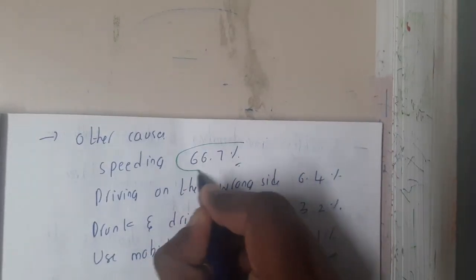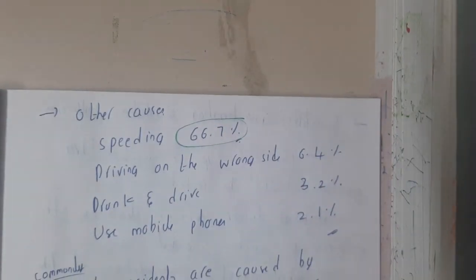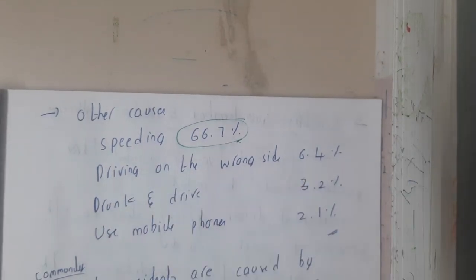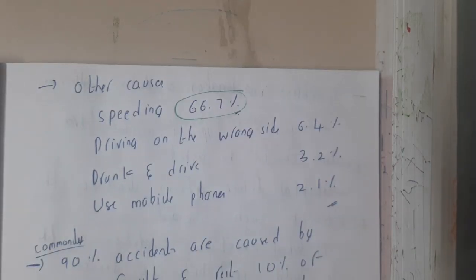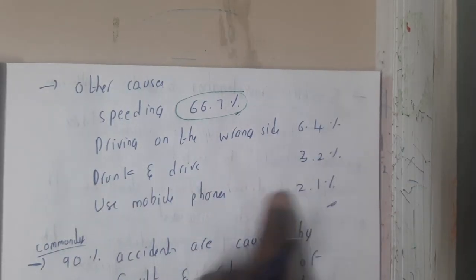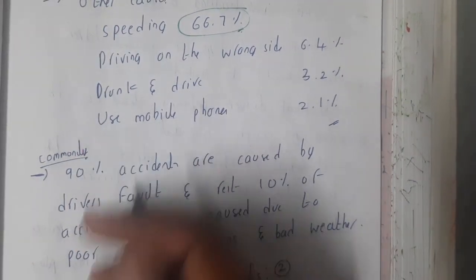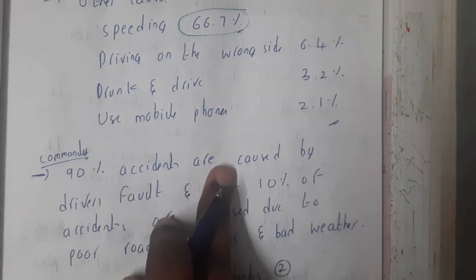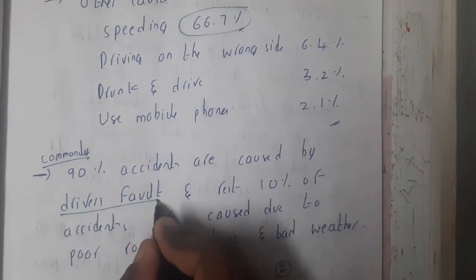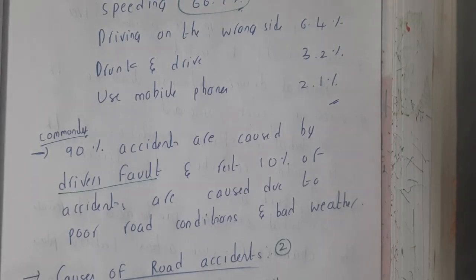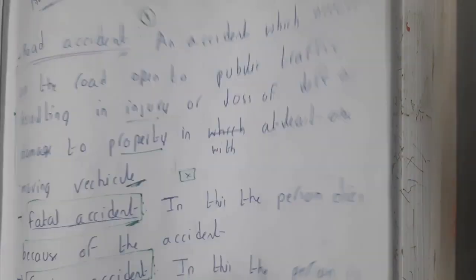Due to speeding alone, over 66 percent of accidents occur. Driving on the wrong side causes 6.4 percent, drunk driving causes 3.2 percent, and use of mobile phones causes 2.1 percent of accidents. Around 90 percent of accidents are caused due to the driver's fault or carelessness, while the remaining 10 percent are due to poor road conditions.